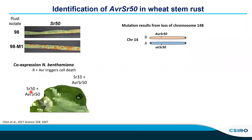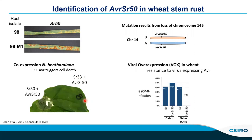In the tobacco system, if you co-express the resistance gene and the avirulence protein it triggers cell death. You can see that SR50 and AVRSR50 together result in cell death, whereas SR33, a different resistance gene, cannot recognize AVRSR50 and you don't get cell death. We also confirmed function in wheat using a viral expression assay done by Kostya Kanyuka at Rothamsted, engineering barley striped mosaic virus to express AVRSR50. A virus expressing AVRSR50 is unable to infect a wheat line carrying the SR50 resistance gene, confirming avirulence in planta.